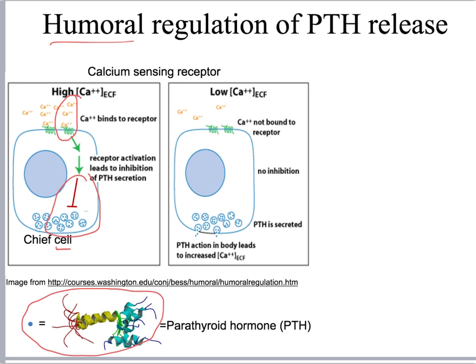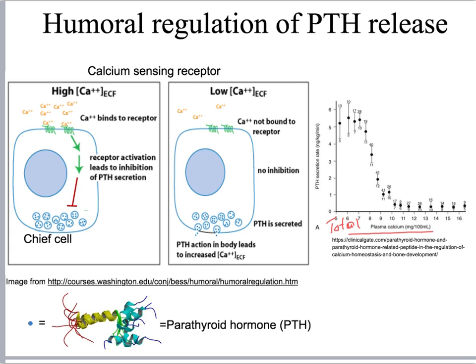When calcium concentration is high, there is less secretion of parathyroid hormone. When calcium concentration is low, there is less signaling from the G-protein coupled receptor and increased fusion of vesicles, releasing more parathyroid hormone into the serum. This results in an inverse relationship between the rate of parathyroid hormone secretion and the total plasma calcium concentration. The normal total calcium concentration in the serum falls in the range where there are lower levels of parathyroid hormone secretion.